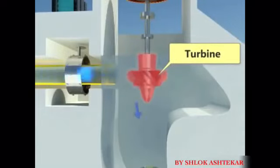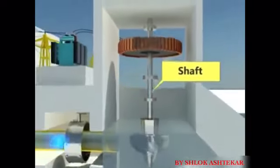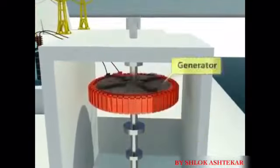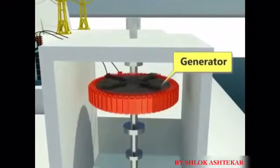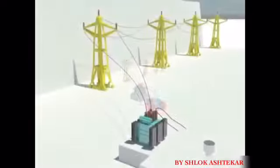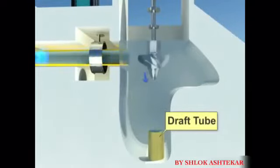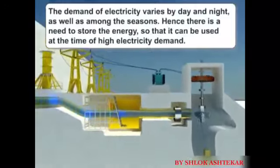Due to the force of water, the turbine starts rotating, producing mechanical energy. The shaft from the turbine is connected to the generator, which produces electricity. The voltage of this electricity is raised by using a transformer and is transferred by the distribution lines. After running the turbine, the water is passed to the downstream water level by a draft tube.